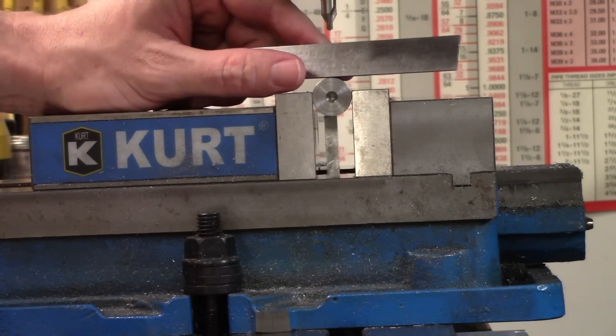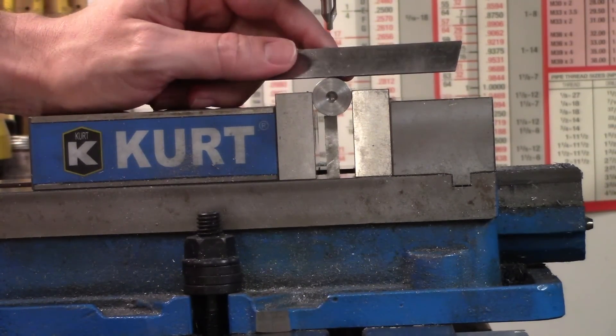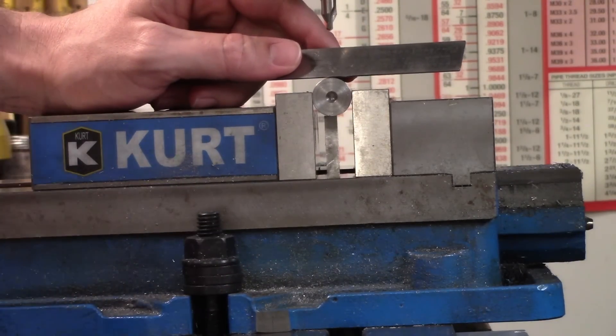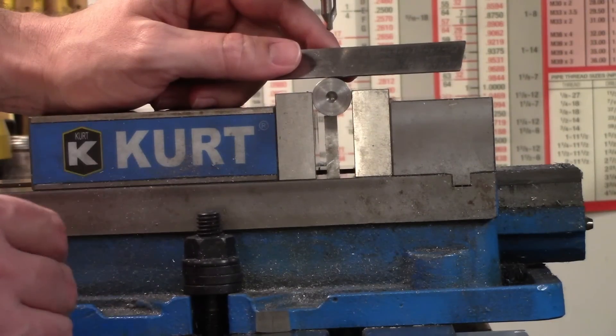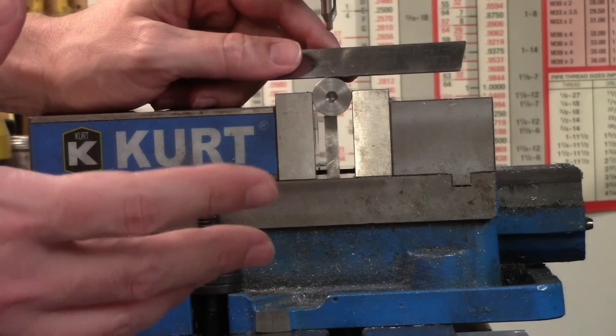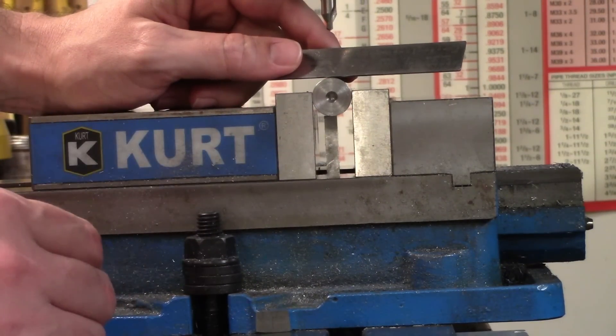One last thing I want to mention before we get into testing is that I do not use this trick with carbide tooling. Carbide is very brittle, so if you press it down against the scale, it has a tendency to chip. That goes the same for the lathe as well. If you're pressing a carbide insert against the scale, you might end up chipping that insert.